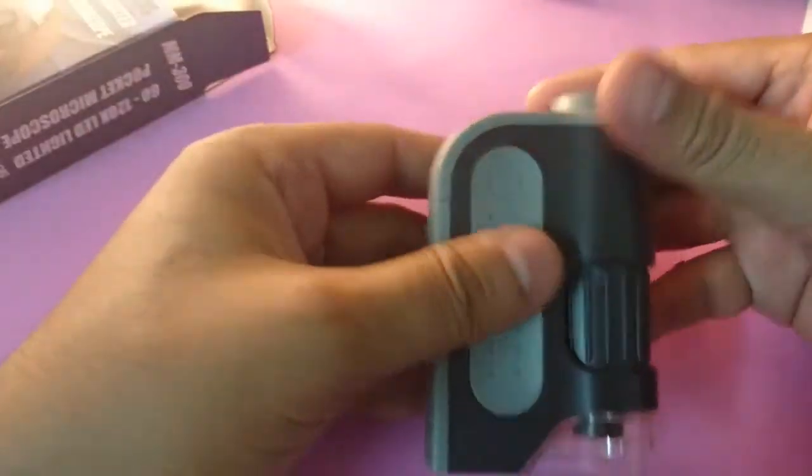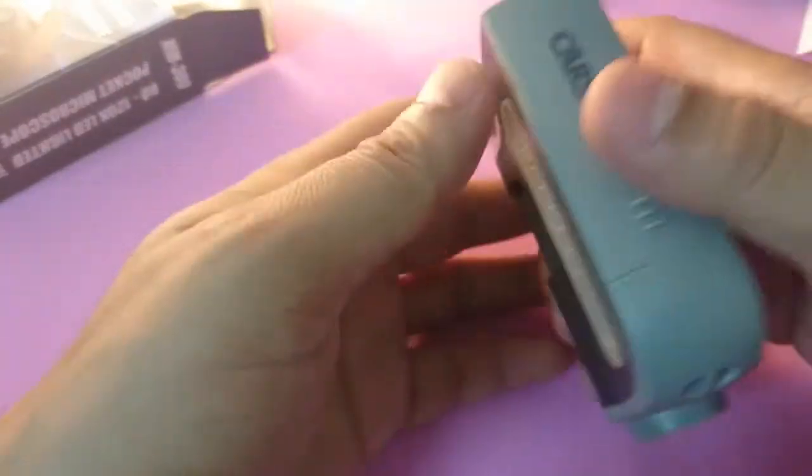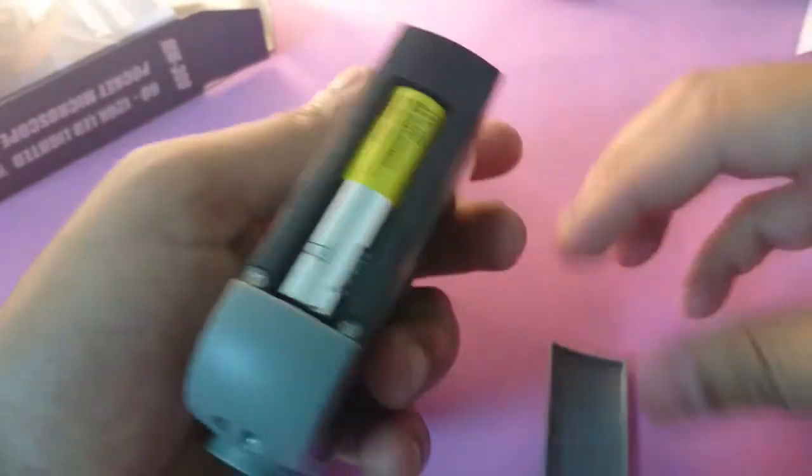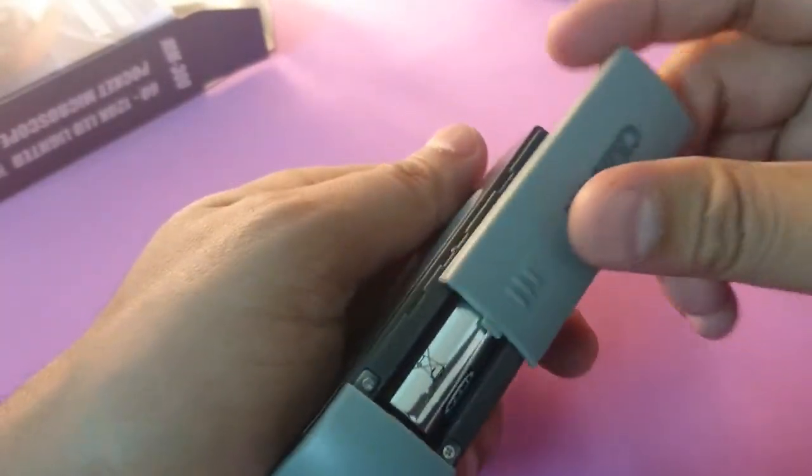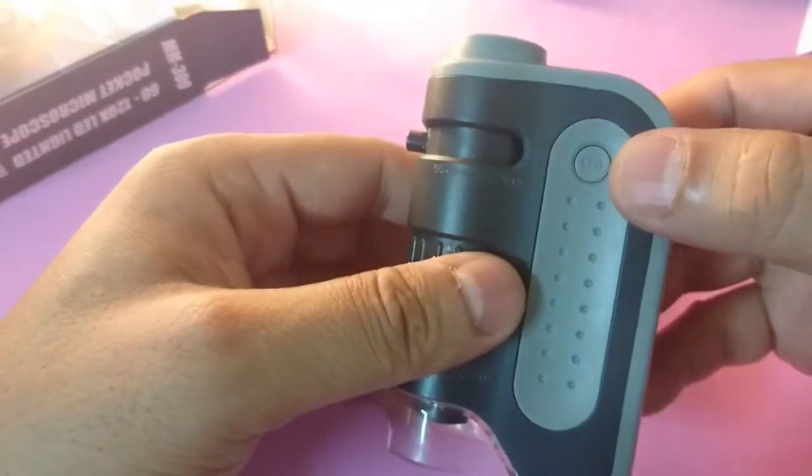Here you can see this is the microscope. The build quality looks good - Carson. I have just put a battery. It takes a AA sized battery and this is the LED switch.